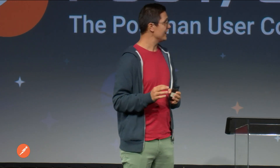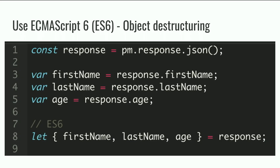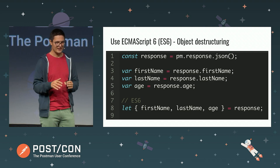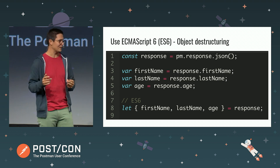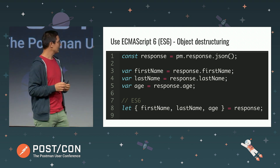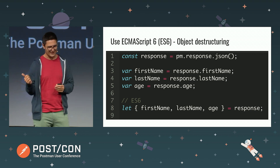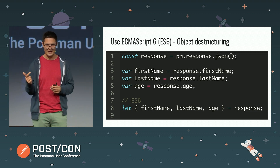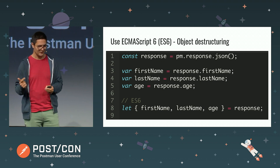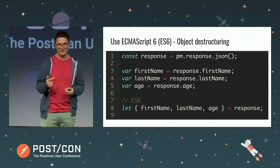Another ES6 feature is object destructuring. What happens a lot is you get a response and want to extract some variables from it. In ES5 you have to initialize each property with each value individually, which can be time consuming. ES6 allows you to use a special syntax to just copy those properties from the response in one go. ES6 also introduces const and let, which are definitely better practice than simply using var.